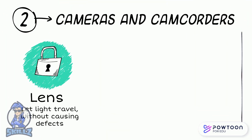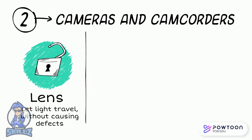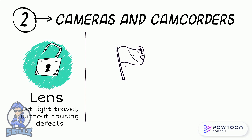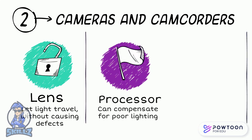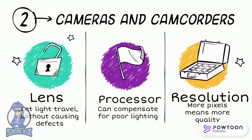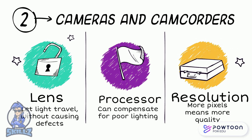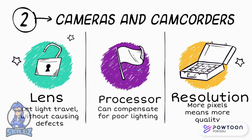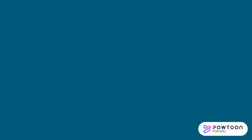A good lens allows light to travel through it without introducing any defects, and allows the user to choose how much light can travel through it. A good image processor can compensate for poor lighting conditions. Digital images are made up of pixels, and better quality sensors can capture more details and more pixels.